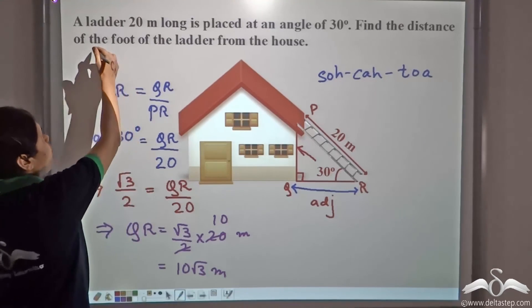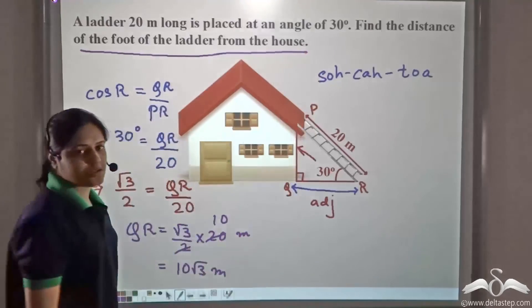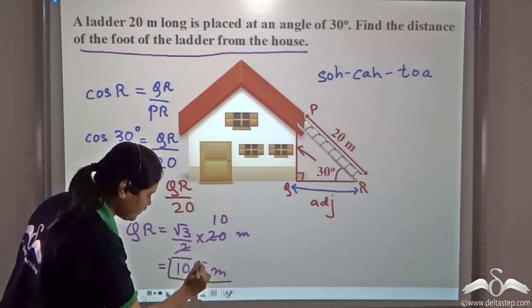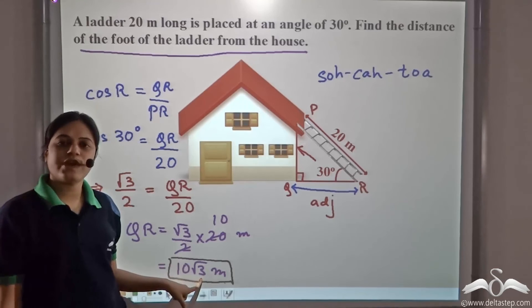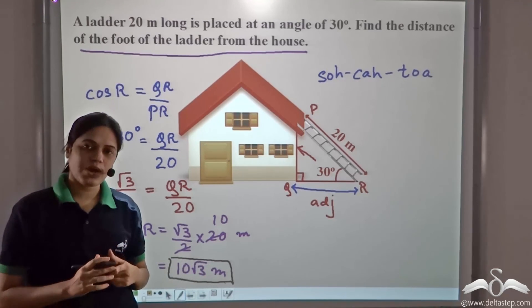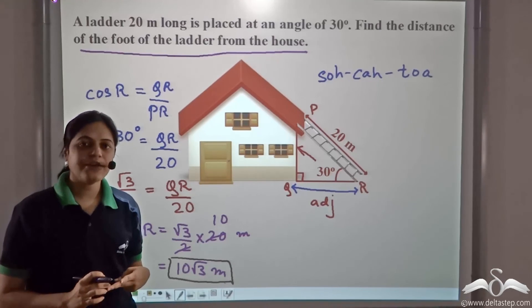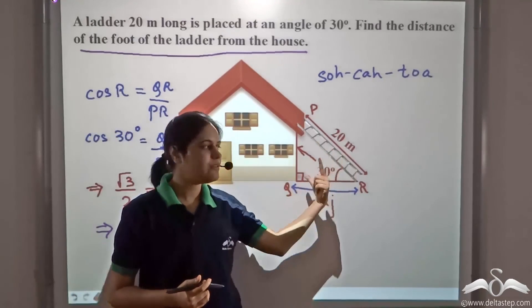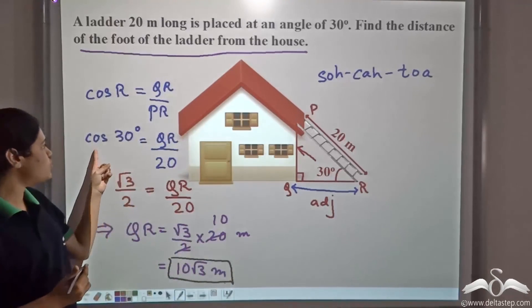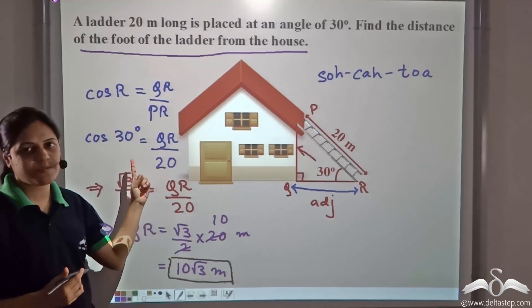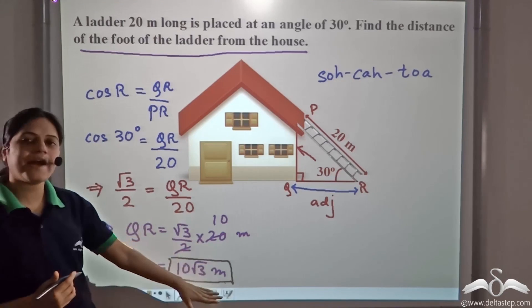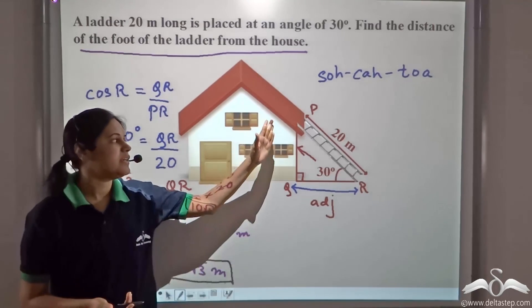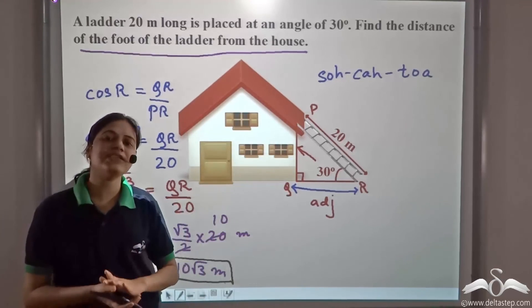The two and twenty cancel to give ten, so QR equals ten root three meters. This is the distance of the foot of the ladder from the house. Given a problem, we need to determine what is given and what we have to find, then use the trigonometric ratio between the given side and the side we need to find. If you remember the values of trigonometric ratios for special angles, you can very easily solve the problems. This is how we use trigonometry to find distances and heights which are otherwise very difficult to measure.